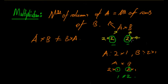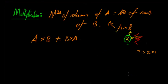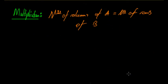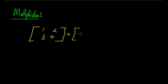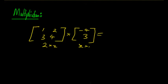A quick way to check: write down the dimensions as rows and columns side by side, then check that the inner numbers match. Those inner numbers are the ones that tell you whether multiplication is possible — you don't need to worry about the outer numbers for compatibility. So for A times B, you just look at those middle values.